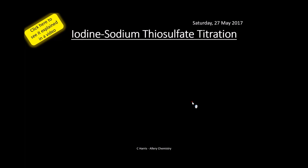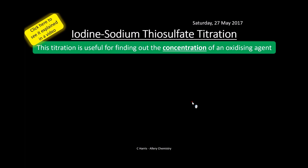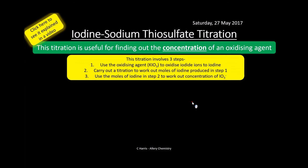The iodine–sodium thiosulfate titration is used to find the concentration of an oxidizing agent. It has three distinct steps. Step one: use the oxidizing agent KIO₃ (potassium iodate(V)) to oxidize iodide ions to iodine. Step two: carry out the titration to work out the moles of iodine produced in step one. Step three: use the moles of iodine from step two to work out the concentration of IO₃⁻ ions.